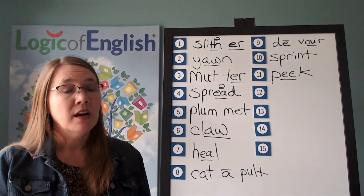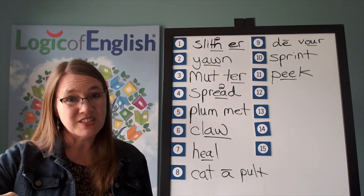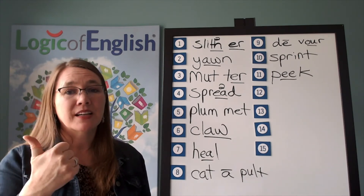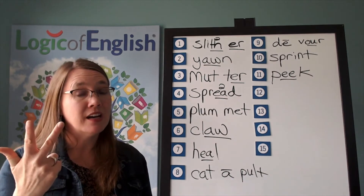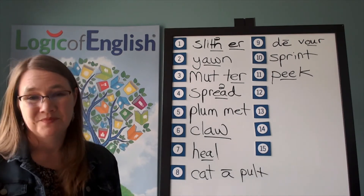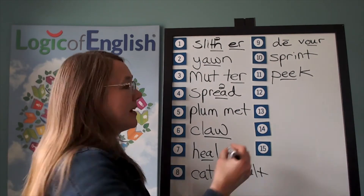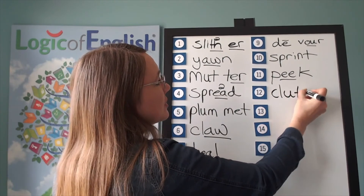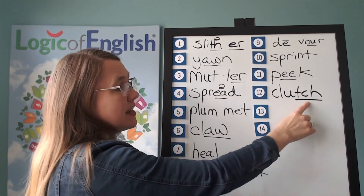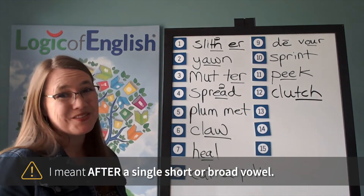The next word is clutch. The clutch on the car went out, or I need to clutch onto that to hold onto it. Clutch. Go ahead and say clutch. Let's sound it out: c, l, u, ch. That's right — it's a three-letter tch. Go ahead and write clutch. Help me to write it: c, l, u, tch. We'll underline the ch. Let's read it: c-l-u-tch — clutch. It's three-letter tch, which is used only after a single short or broad vowel, and there it is before a short vowel.